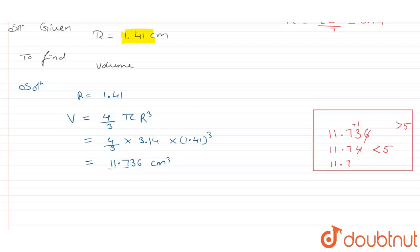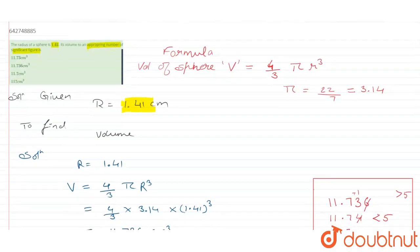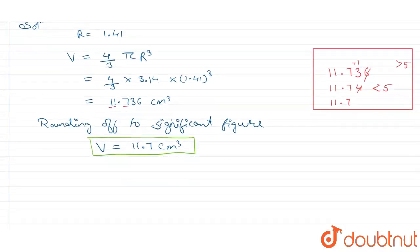Keeping this in mind, we will continue as rounding off to significant figures. Let us check the options. 11.7 cm³ is option number 3. Thus, we can say that the right answer is option C, which is 11.7 centimeter cube.